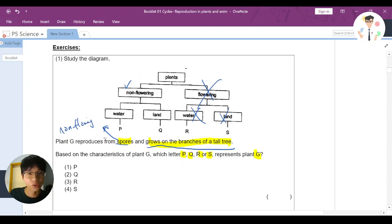But here it says what? Grows on the branches of a tall tree, means that they'll be under the land path.